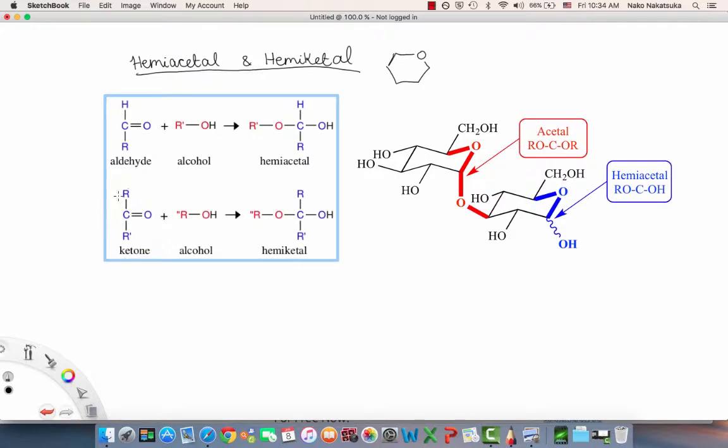And now if you have a ketone and you have an alcohol, then you have a hemi-ketal bond. And so basically, depending on whether you have an aldehyde or a ketone in your monosaccharide, you're going to end up with a hemiacetal or a hemi-ketal when you fold it up.